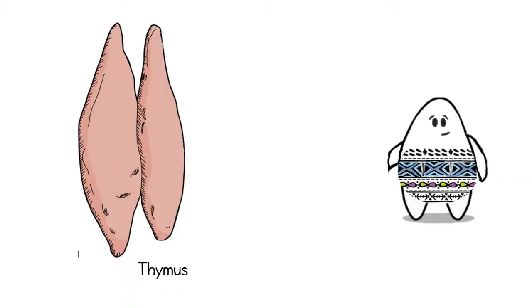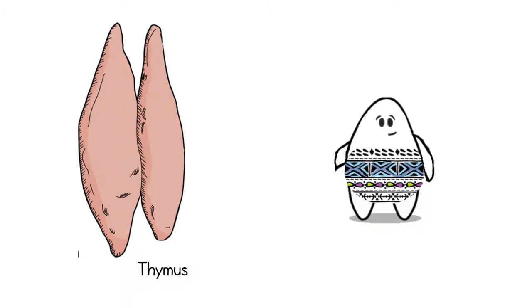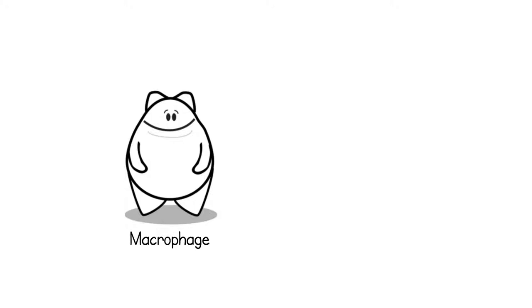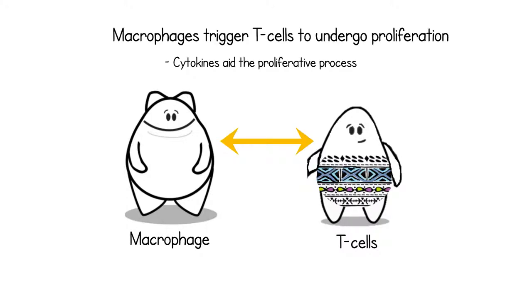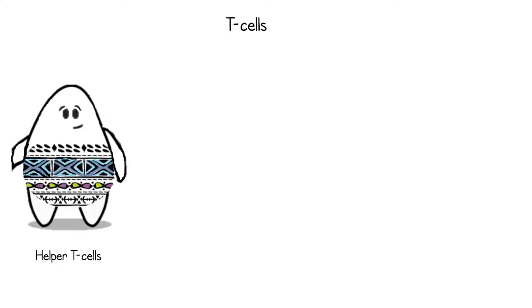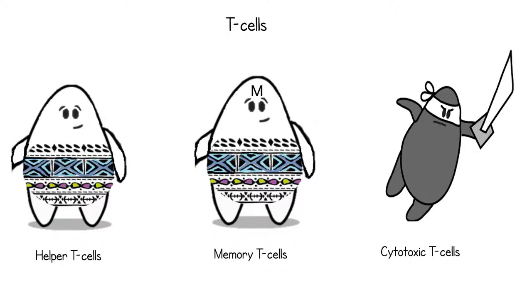Unlike B cells, T cells are produced within red bone marrow and move to the thymus to mature. The interaction between macrophages and T cells triggers the T cell to undergo proliferation by releasing cytokines that activate helper T cells. This helps to further prolong the proliferation between newly created helper T cells, producing thousands of helper T cells, memory cells, and cytotoxic cells.